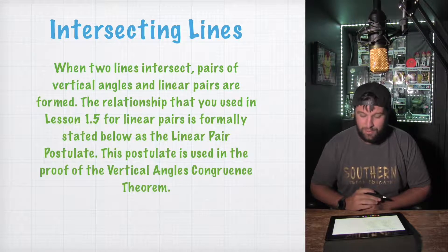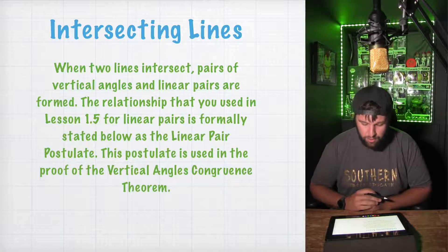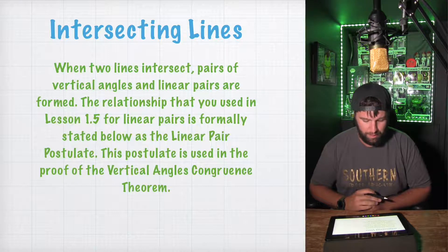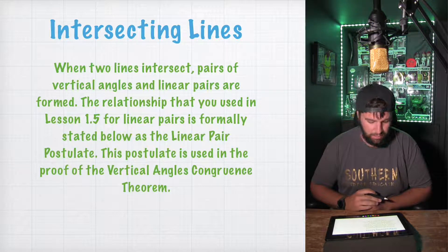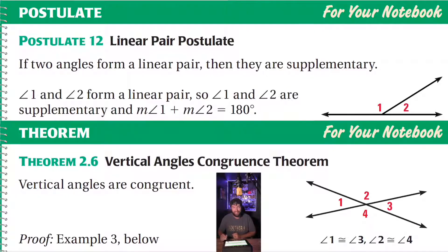So, intersecting lines. When two lines intersect, pairs of vertical angles and linear pairs are formed. The relationship that you used in lesson 1.5 for linear pairs is formally stated below as a linear pair postulate. The postulate is used in the proof of the vertical angles congruence theorem. So, the linear pair postulate: if two angles form a linear pair, then they are supplementary. Don't forget that. Supplementary means they equal 180 degrees, which means that they're a linear pair also, if they're on the same line.